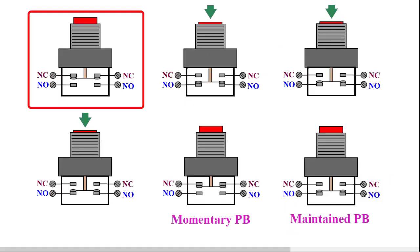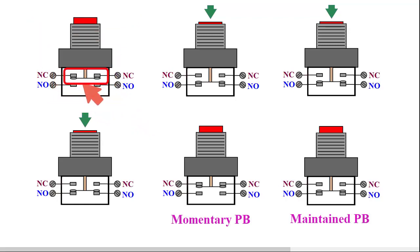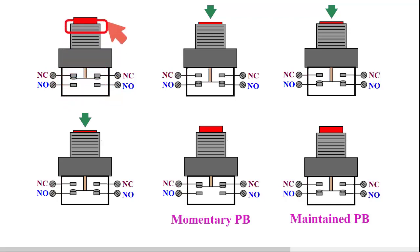In industry, we use different types of push buttons to run different devices like lights, fans, pumps, motors, etc. The construction of push buttons is like this — it has two types of contacts: one is a normally closed contact and another one is a normally open contact.